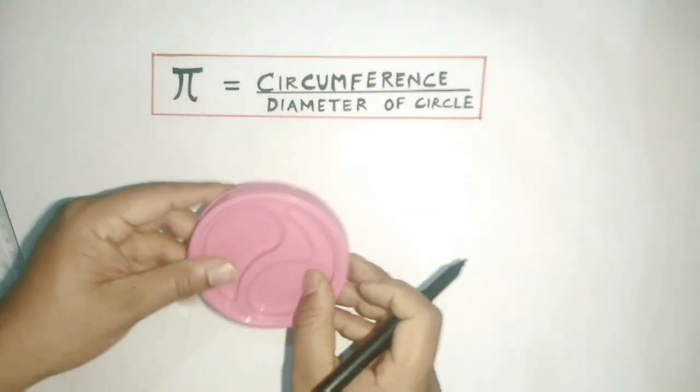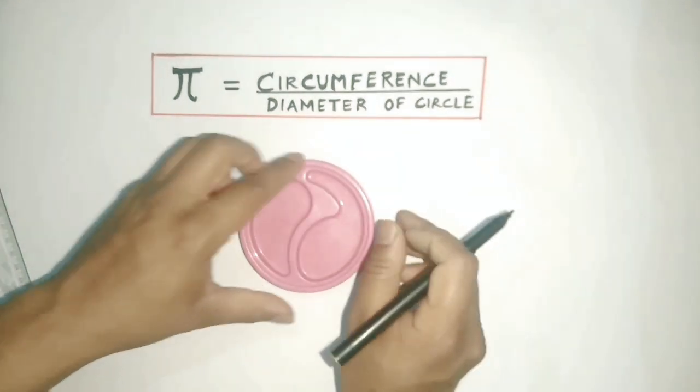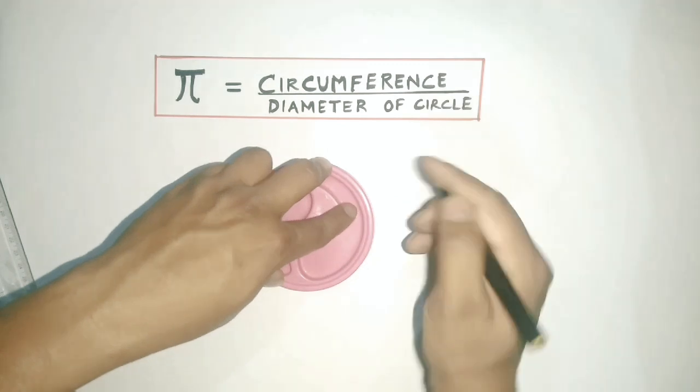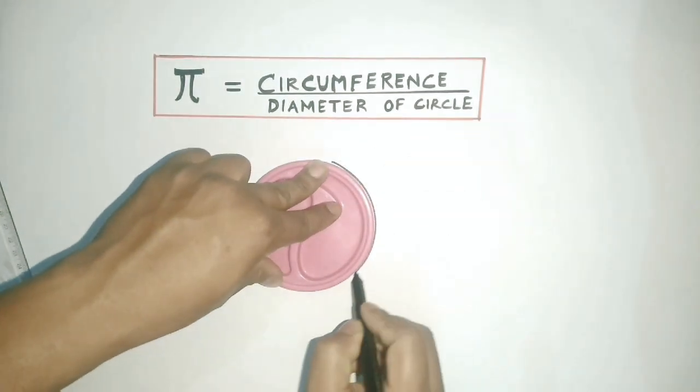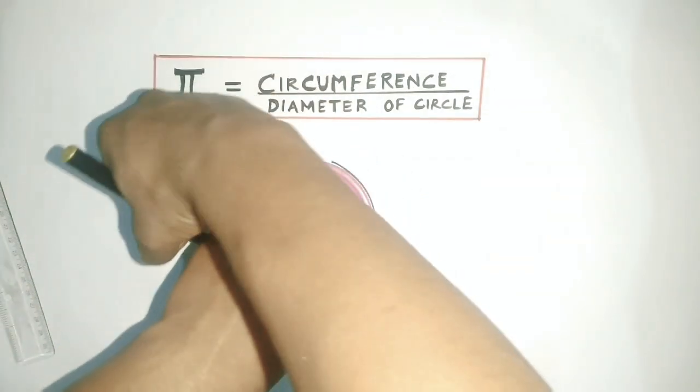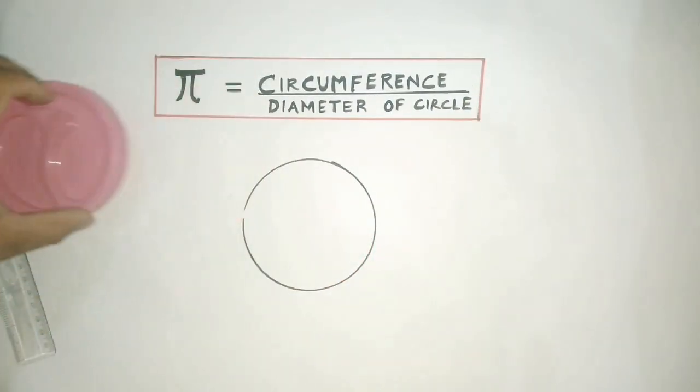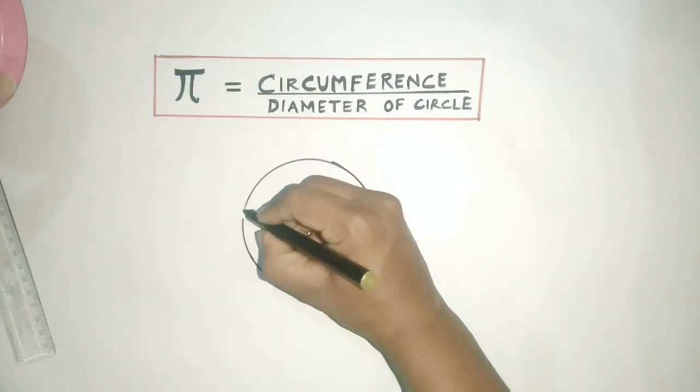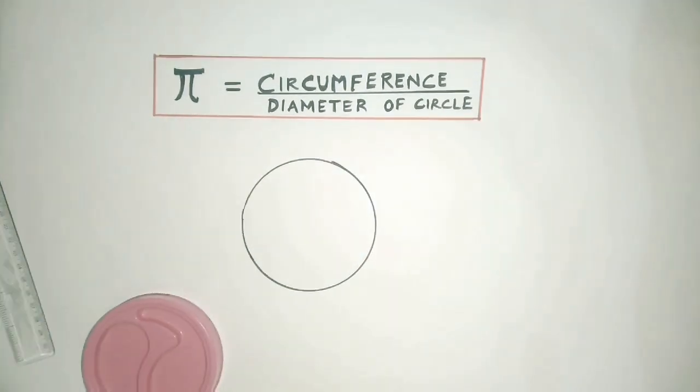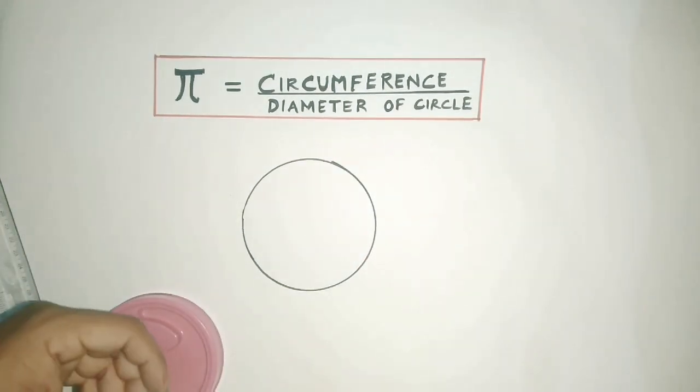Now let us start the activity. At first, my aim is to find the circumference of this circle. This particular plastic solid shape represents a circle, so what I do is I just draw the outline of this shape. Now I get a complete circle.